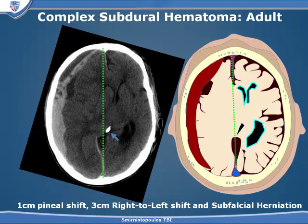The subdural hematoma is layered around almost the entire cerebral hemisphere. Despite the significant mass effect and herniation, there is relatively little displacement of the pineal gland — which is why we don't use plain films as the only evaluation for intracranial herniation and shift. There is effacement of the ipsilateral sulci, which are much larger on the unaffected hemisphere. The subarachnoid space continues to be filled with cerebrospinal fluid, once again proving that the subdural space is on top of the arachnoid — it truly is the epiarachnoid space.